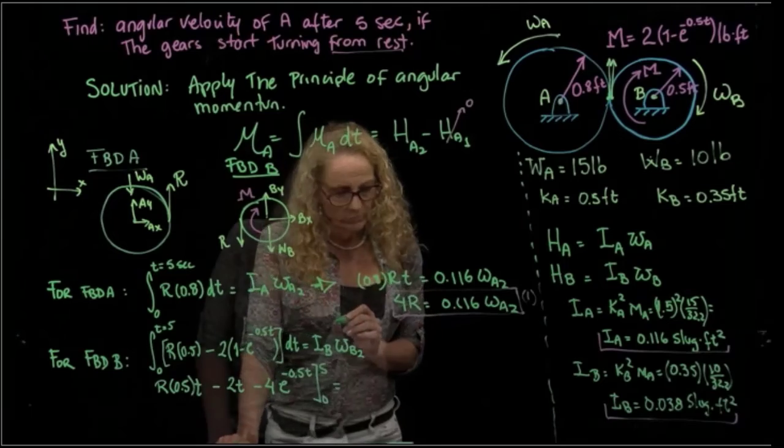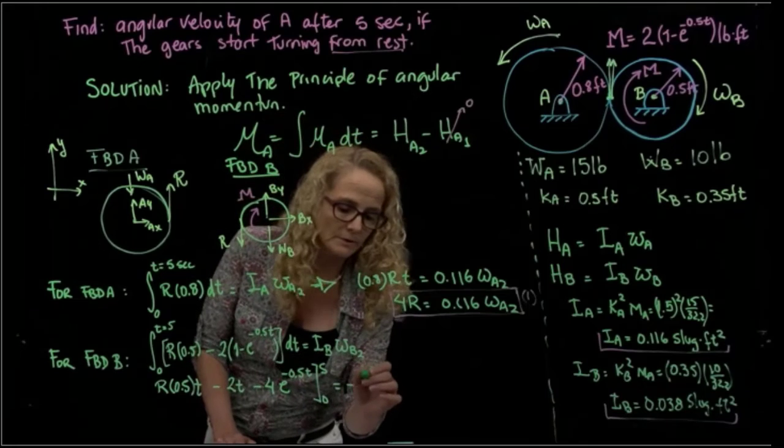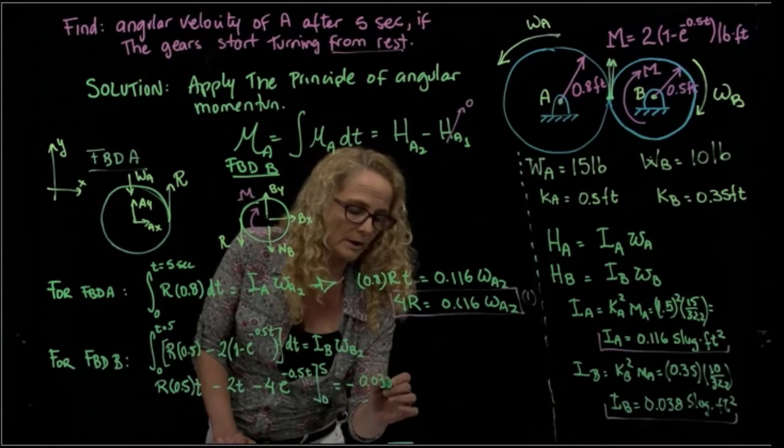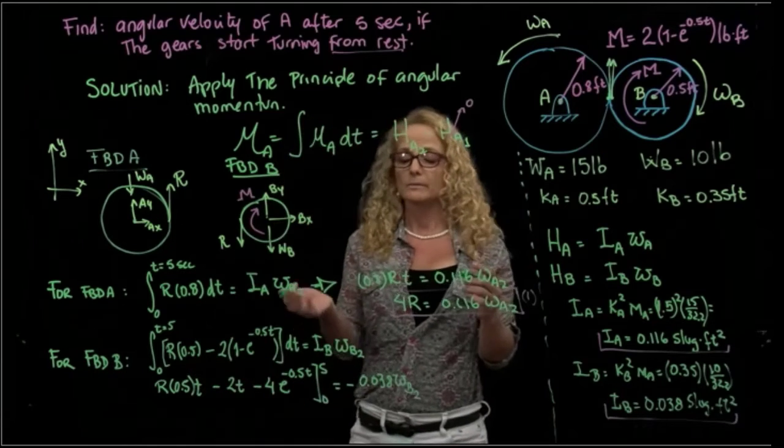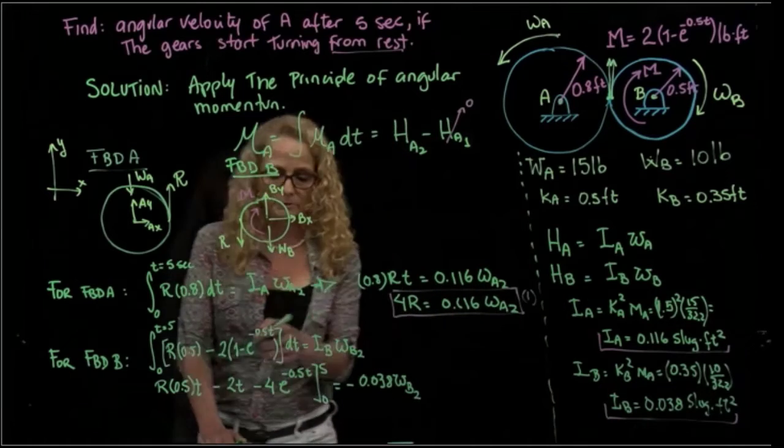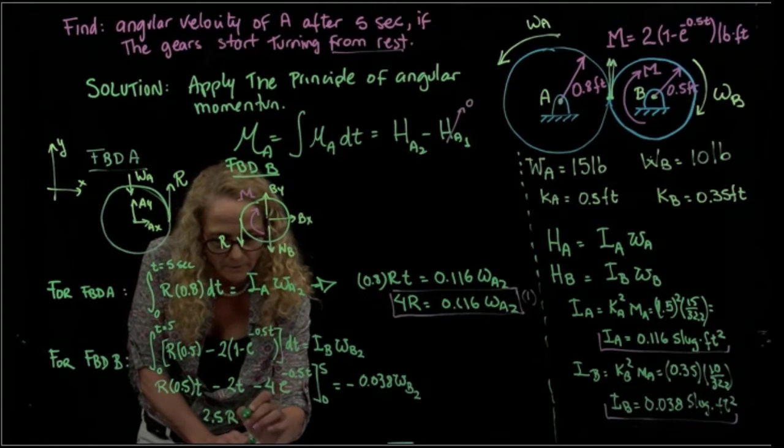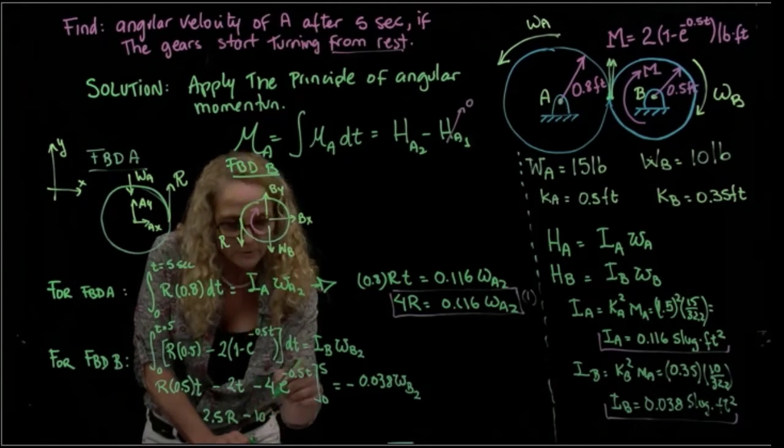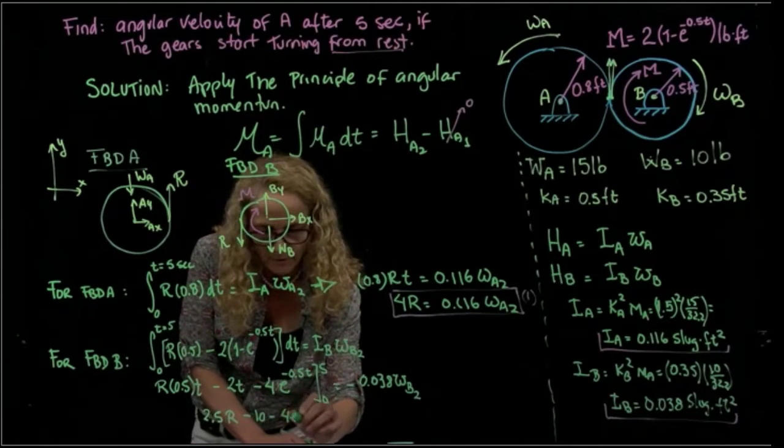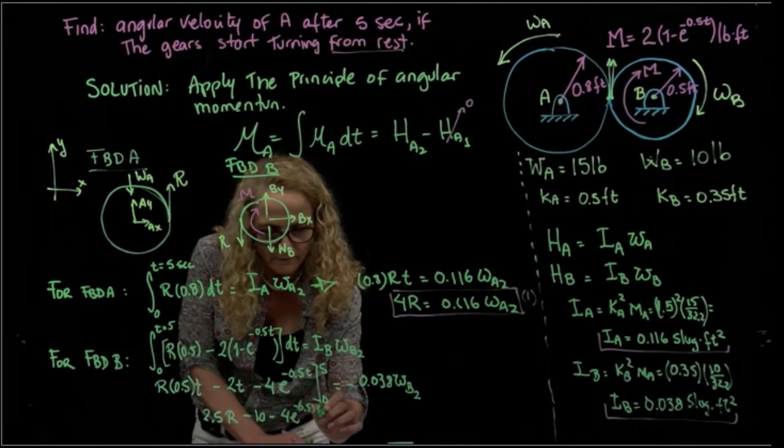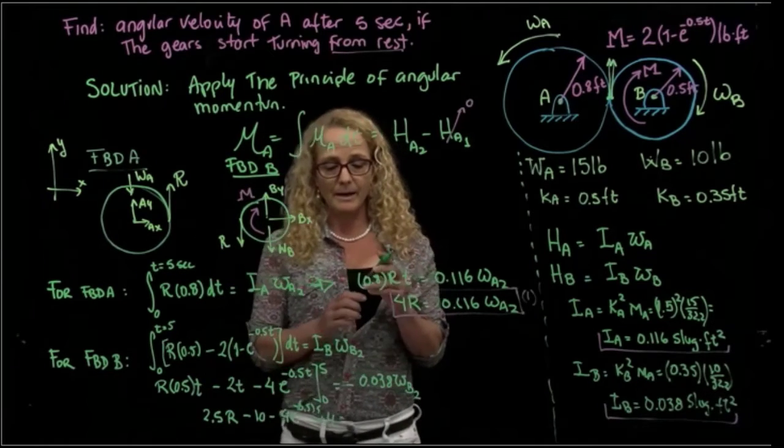And that is equals to moment of inertia, which is where I'm going to put negative for the reason that I just told you, negative 0.038 angular velocity of B. As you see, here we have another equation. Let me write that equation. All that gives me, so if I put 5 over here, 2.5R minus 10 minus, I have to evaluate in 5 and then in 0, that is negative 4e to the 0.5 times 5 plus 4 equals... Okay, here I'm going to, since I have too many unknowns, I will relate those two velocities.